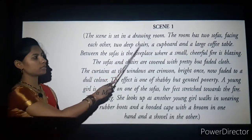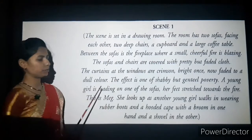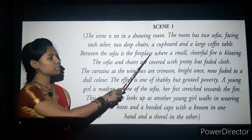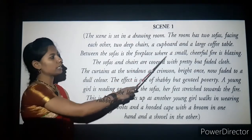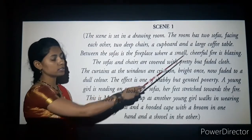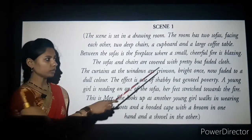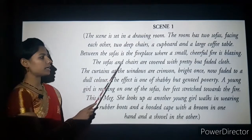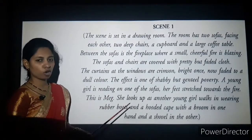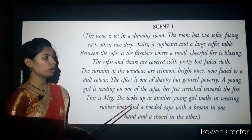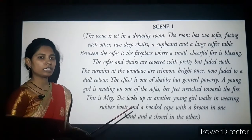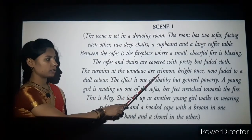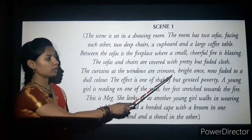The teacher explains: The room has two sofas, two deep chairs, a cupboard, and a large coffee table. Between the sofas there is a fireplace — a place for keeping a fire — where a small cheerful fire is blazing, meaning burning with strong flames. The sofas and chairs are covered with cloth that was once beautiful but has now turned to a dull color.